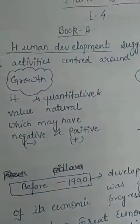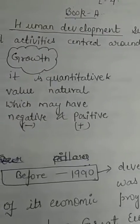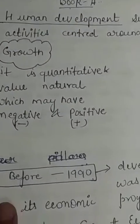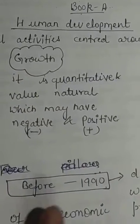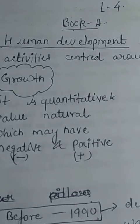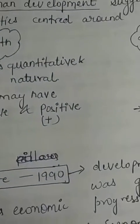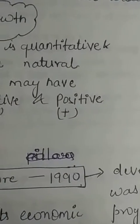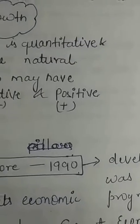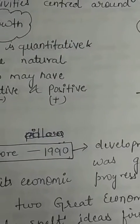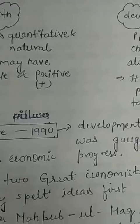Before 1990, the meaning of a developed country was related to economic development only. If a country was economically developed, that meant development was happening — it was not related to any other term. Development was gauged purely as a measure of economic progress, meaning countries with better economic conditions were considered more developed while poor countries were less developed. However, this did not reflect the true nature of development.